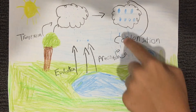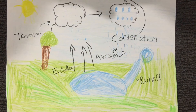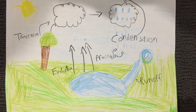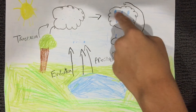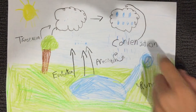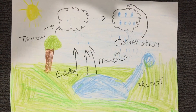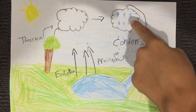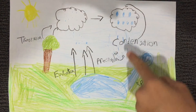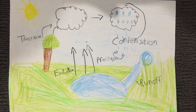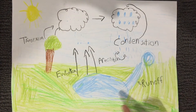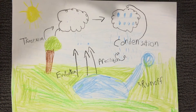Now I'm going to talk about precipitation. Basically it's where all these water droplets get too heavy to be in the clouds and then they fall down into the lakes or rivers.